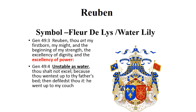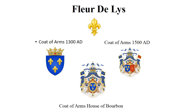Reuben would be the oldest of the sons, and his symbol would be the fleur-de-lis. Genesis 49:3 says he would be strong, mighty, and have power. Genesis 49:4 says he would be unstable as water. On his flag he had a mandrake, which was a flower — so he has the symbol of the fleur-de-lis, sometimes called the water lily. Reuben would be found in France, and you will see the fleur-de-lis on all of their coat of arms — the 13th century, the 15th century, and the House of Bourbon.